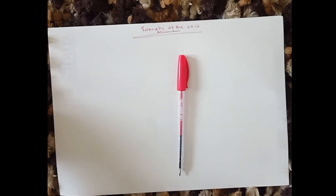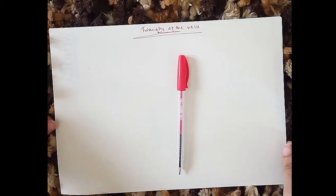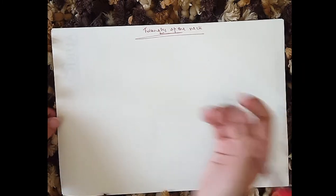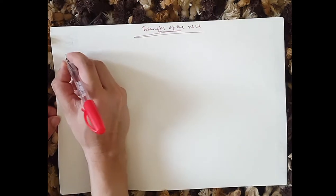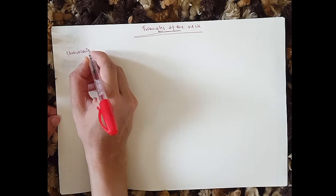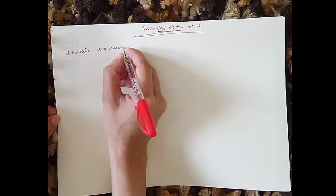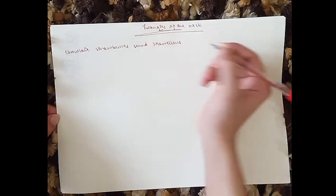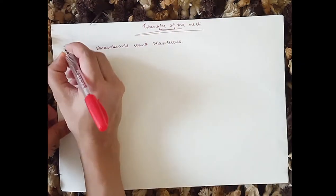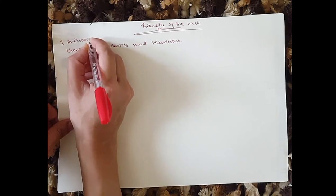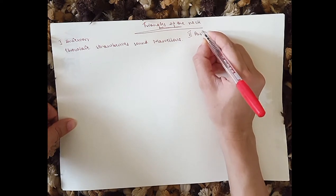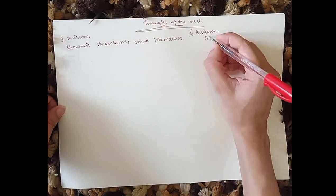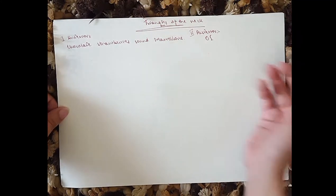Hey guys, it's Leila Colan. I'll be doing the triangles of the neck today, and a mnemonic for the two of them — because we can divide the triangles into the anterior and the posterior triangle. For the anterior triangle, you've got the mnemonic: chocolate, strawberries, sand, marvellous. And for the posterior triangles, you've got just two letters — OS — you can remember it as OS, or operating system, which is kind of lame, but this is what it actually stands for.